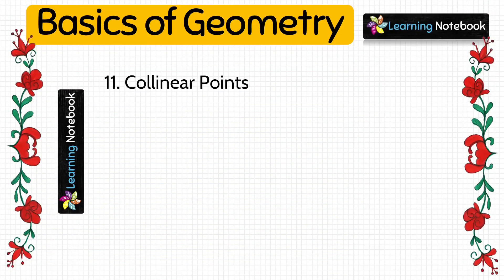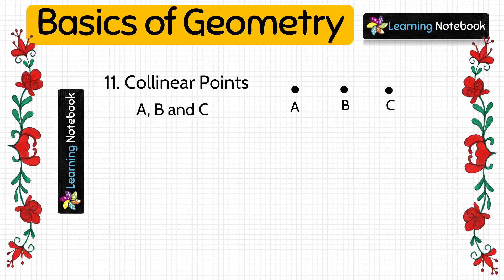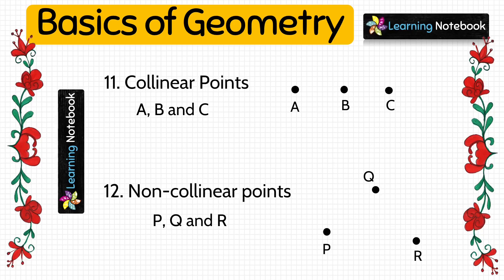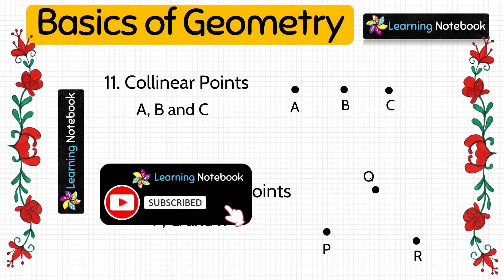The next term used in geometry is collinear points. If three or more points lie on the same line, they are called collinear points. Let's paste three black bindis on the same line to represent collinear points A, B and C. Next are non-collinear points: when three or more points do not lie on the same line, they are called non-collinear points. Let's paste three black bindis to represent non-collinear points P, Q and R.